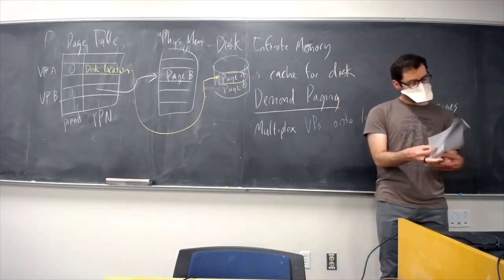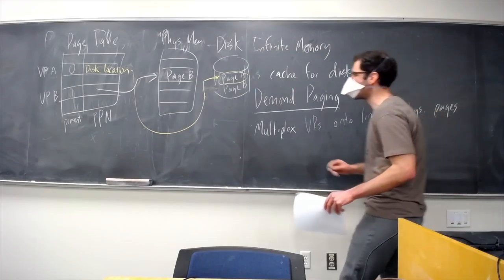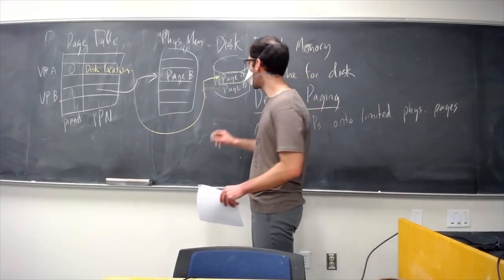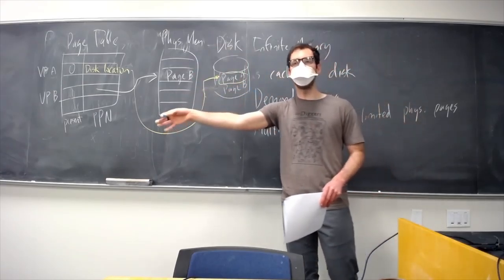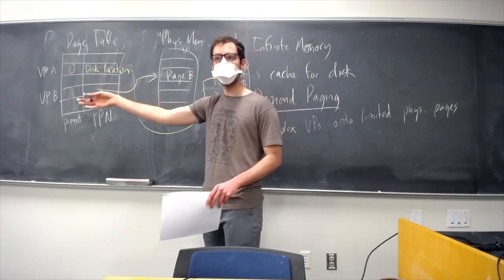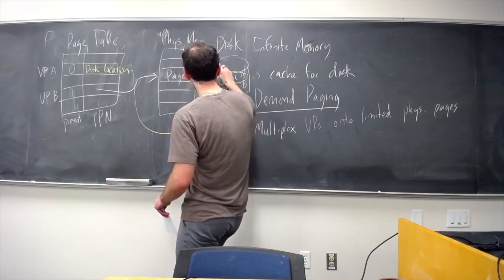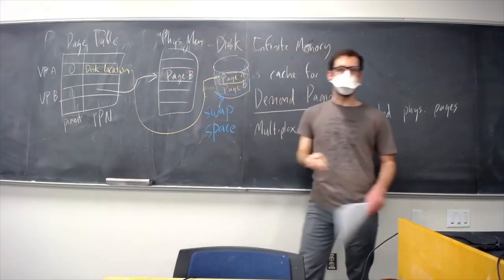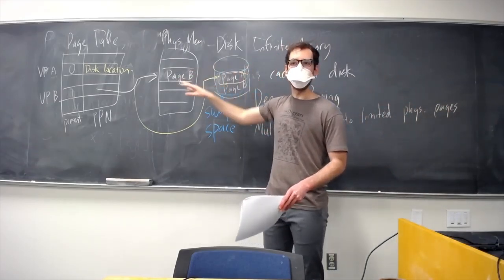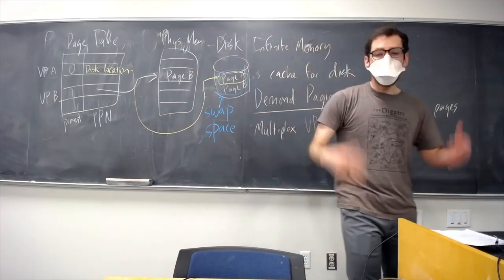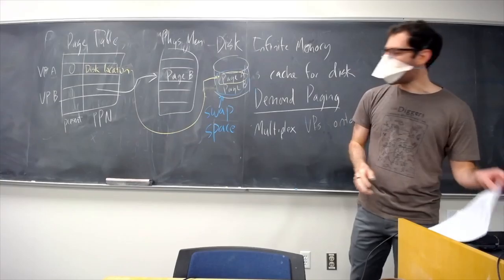The space on disk reserved for pages we don't have room for in memory is called swap space. We reserve a chunk of disk space where we put pages that we're swapping in and out, and the kernel may have mechanisms to grow or shrink this swap space as needed.